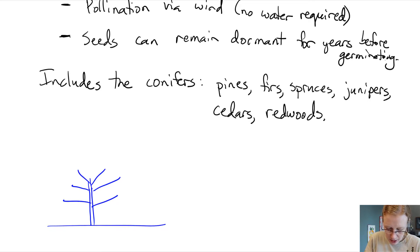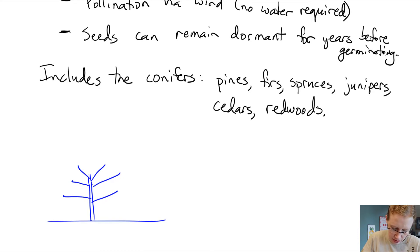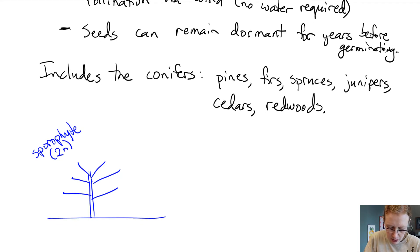The main stalk and the branches coming off the sides. And then at some point, somewhere on this plant, this is a sporophyte which is diploid 2n. There might be leaves on here.